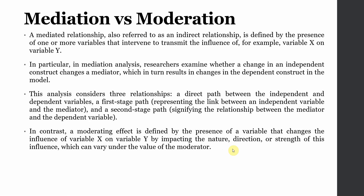A mediated relationship, also referred to as an indirect relationship, is defined by the presence of one or more variables that intervene to transmit the influence, for example from variable X to variable Y. In mediation analysis, researchers examine whether a change in the independent variable brings about a change in a mediator, which in turn results in changes in the dependent variable.